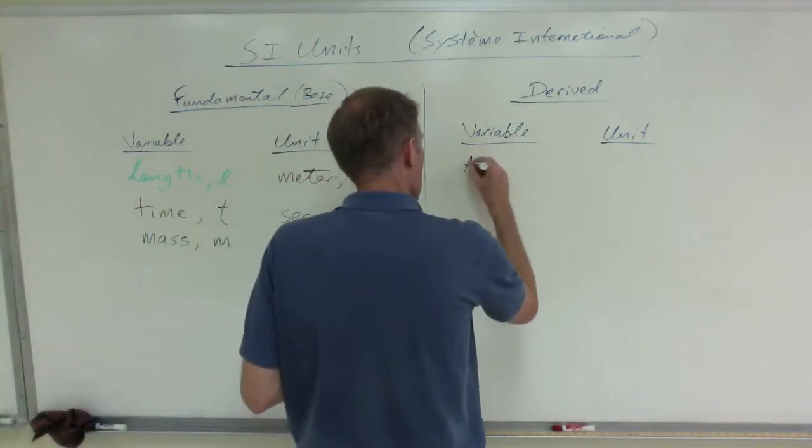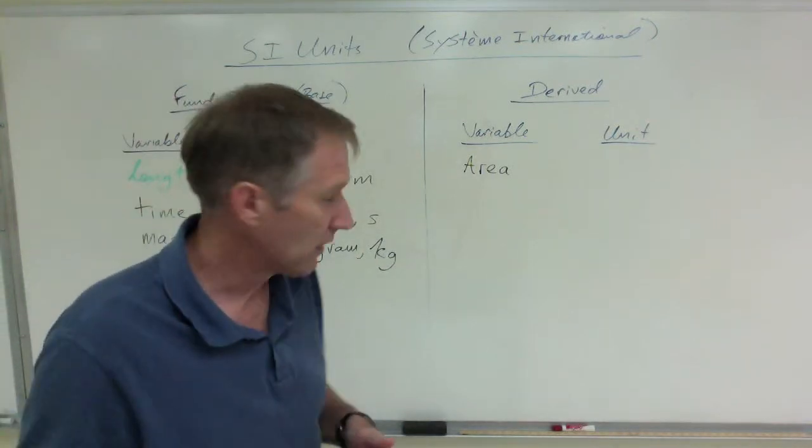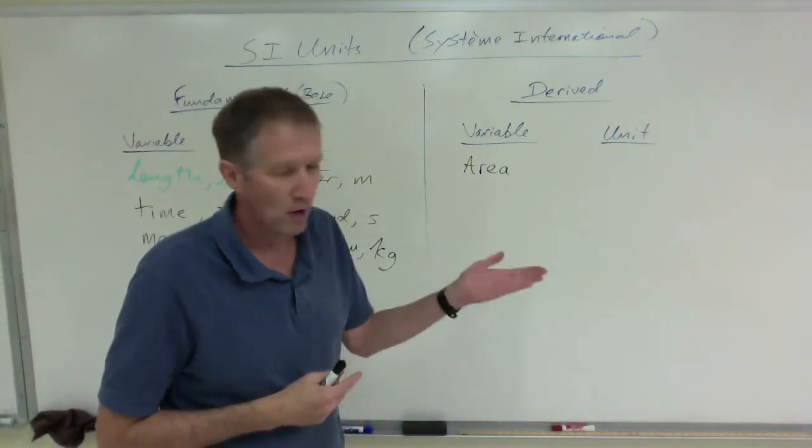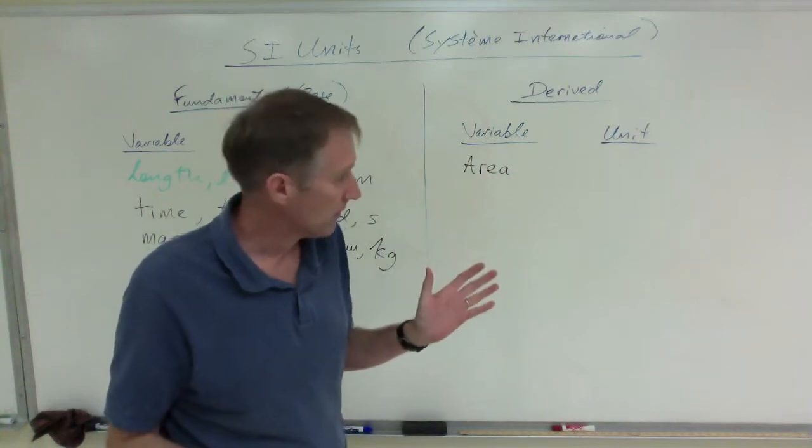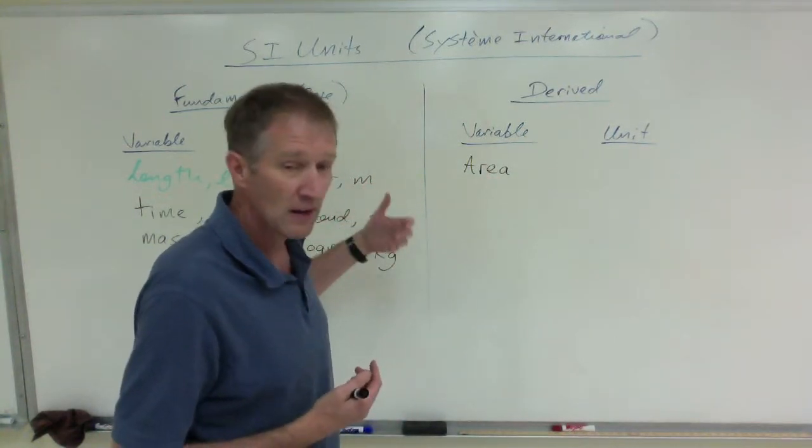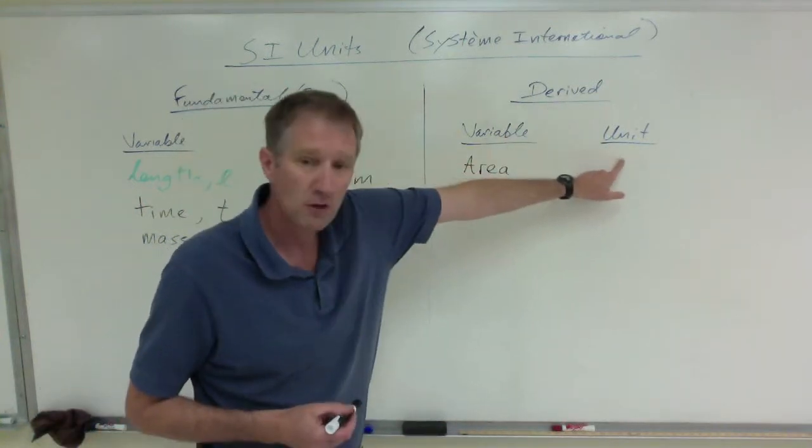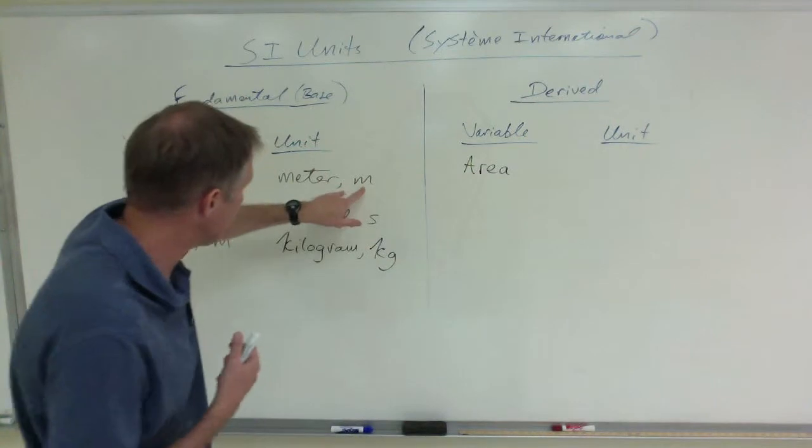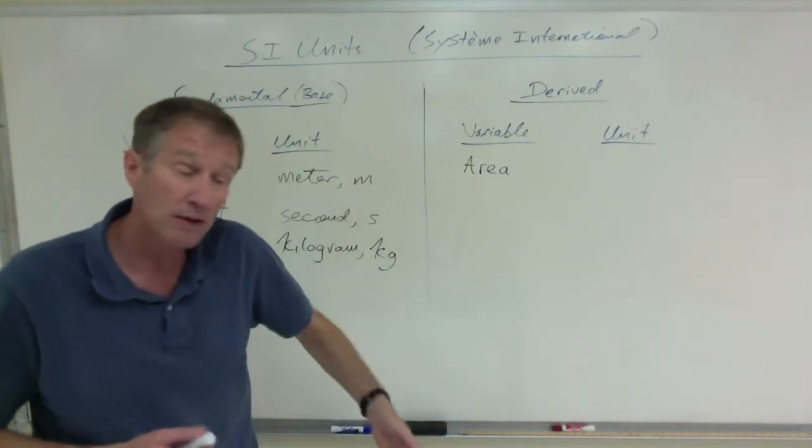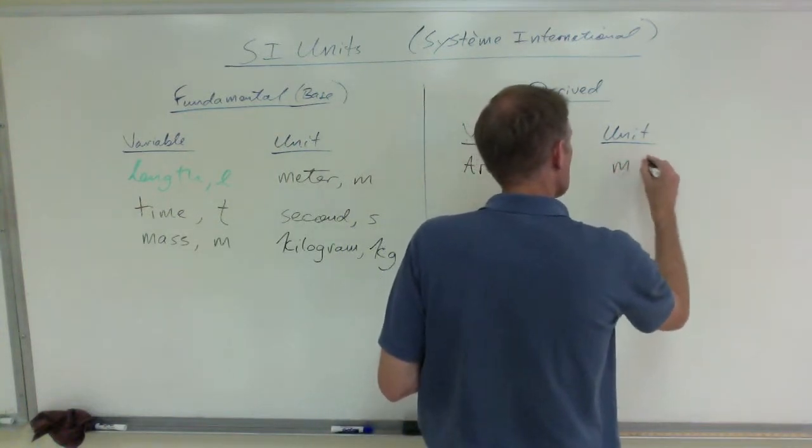For example, area. You know area, like the area of a rectangle or area of a circle, whatever, is going to be, well, area of a rectangle, length times width. If the length is measured in meters, the width is measured in meters, then the area would be meters squared. It is a derived unit. It's derived of the fundamental length unit meters. It's meters times meters. So that's meters squared.